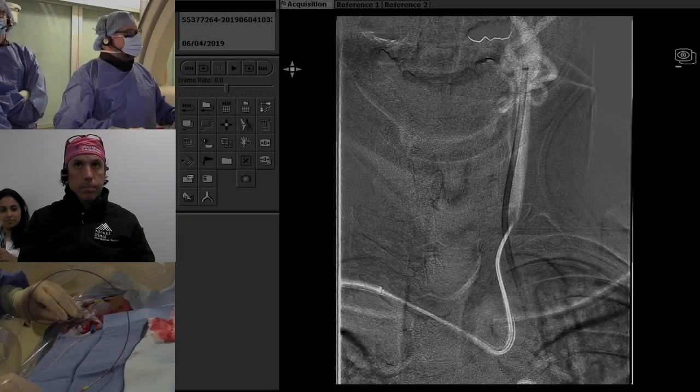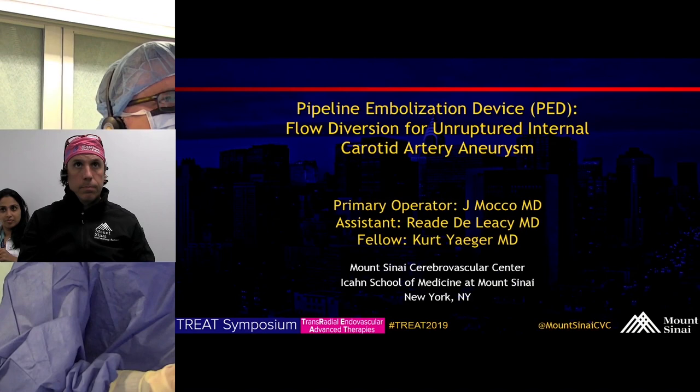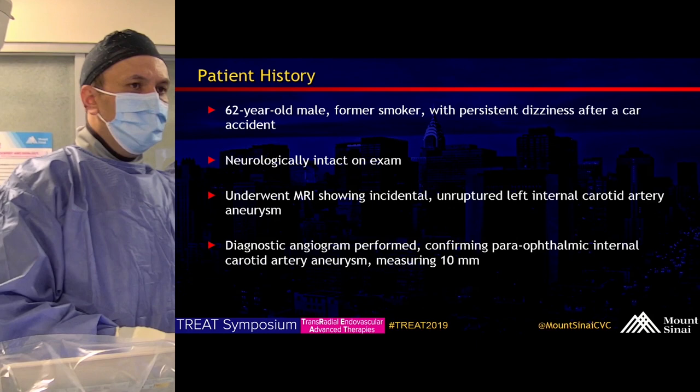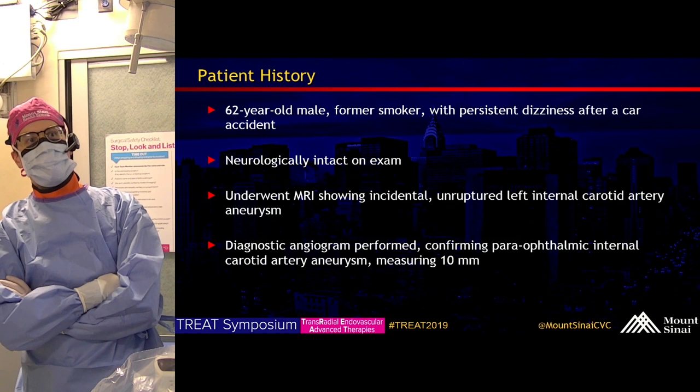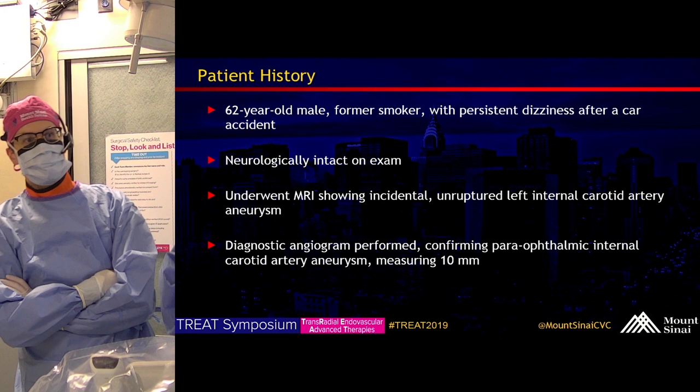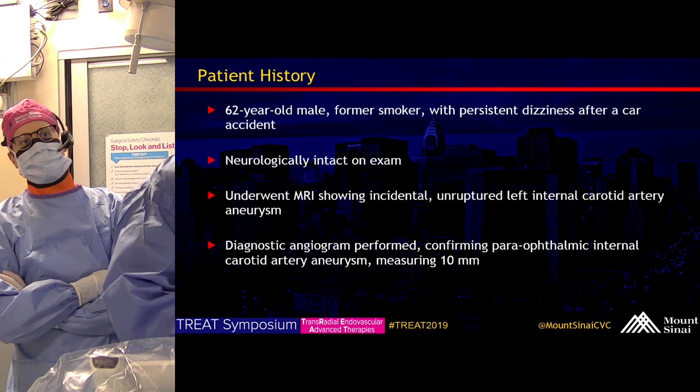This is a pipeline embolization device case for an unruptured internal carotid artery aneurysm. The patient is a 62-year-old gentleman, former smoker, who presented with dizziness after a car accident. He is neurologically intact on exam, but underwent an MRI given the dizziness, which showed an incidental unruptured left internal carotid artery aneurysm. A diagnostic angiogram confirmed a para-ophthalmic segment location measuring about 10 millimeters.